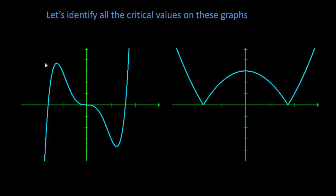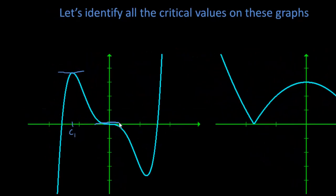So here we go. We have a slope of zero at this point, so I'm going to label that c1. We have a slope of zero here, that's going to be c2. We have a slope of zero here, so that's c3. So these are all critical values.